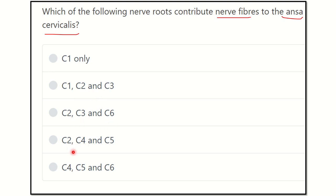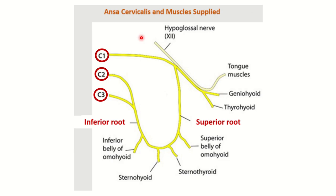The final option is cervical four, five, and six. First of all, we have to find the ansa cervicalis. Once we identify the nerve, its roots will be visible to us. Here we can see this nerve — the ansa cervicalis — and it is now clear that it arises from the cervical one, cervical two, and cervical three spinal nerves.